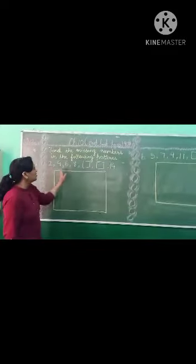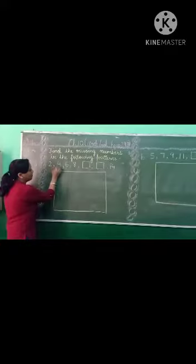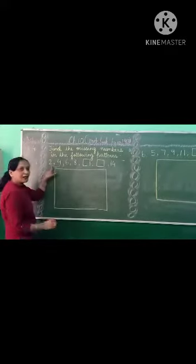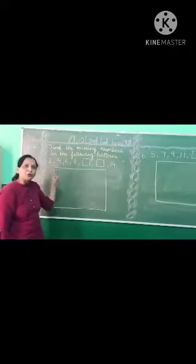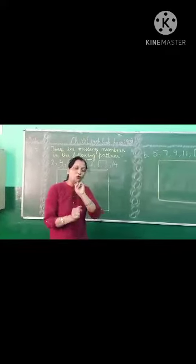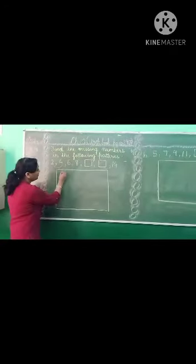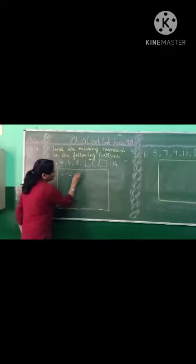First of all, observe the pattern carefully. How did 4 come after 2? We have to count after 2: 3, 4. How many fingers, Peter? 2. So we will add 2 in 2. I got 4. Now again add 2 in 4.